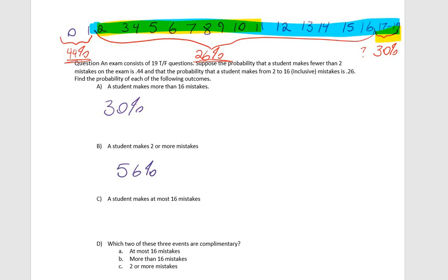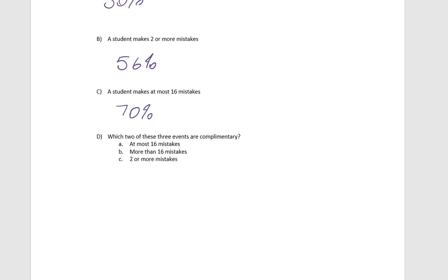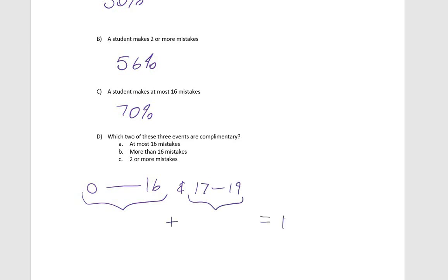What is the probability a student makes at most 16 mistakes? At most 16 means somewhere between zero and 16, so we add 44 and 26 to get 70%. Now, which two of these three events are complementary? At most 16 mistakes (zero to 16) and more than 16 mistakes (17 to 19) together cover all possibilities with no overlap and no gaps — so those two are complements, adding to 100%.